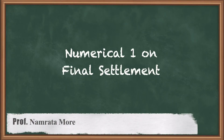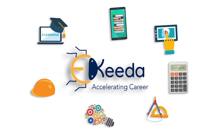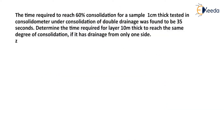Hello everyone. In this video we are going to discuss numericals based on final settlement. The time required to reach 60% consolidation for a sample 1 cm thick tested in a consolidometer under double drainage was found to be 35 seconds. Determine the time required for a layer of 10 meter thick to reach the same degree of consolidation if it has drainage from only one side.